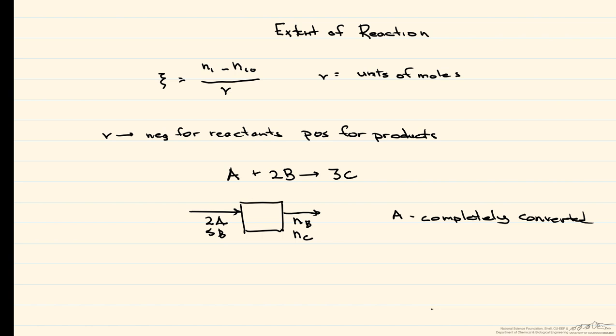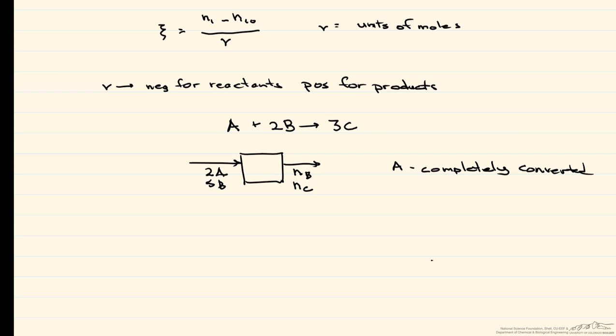What we do have exiting is some number of moles of B and some number of moles of C. What we want to know is the number of moles of B and C that exit. We can write our extent of reaction equation in terms of the exiting species. The number of moles of I that exit is equal to the number of moles of I that are fed plus the stoichiometric coefficient of I times the extent of reaction or squiggle.